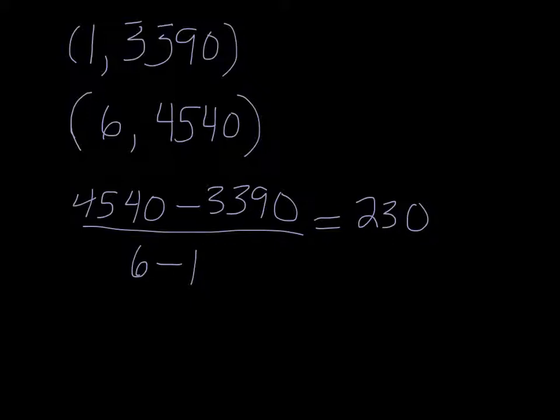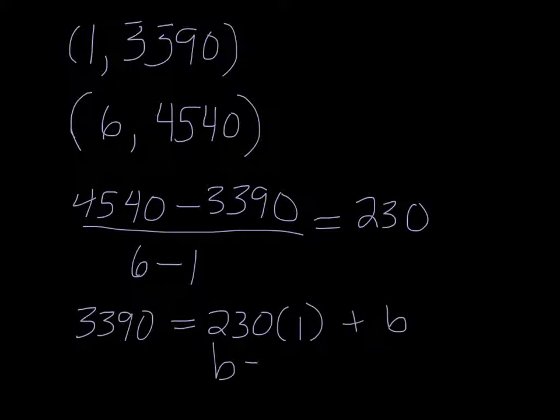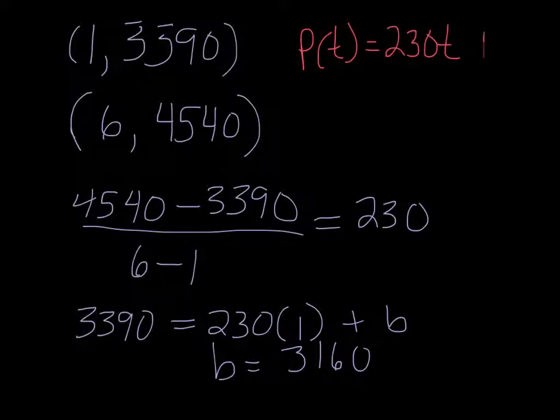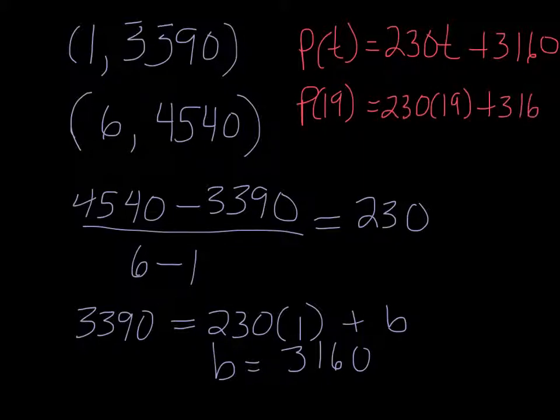And then we need y-intercepts. So pick one of the points, I'll pick the first one. So 3390 is the y, is equal to 230 times our x, which is one, plus b. So b is just going to be 3390 minus 230. So it would be 3160. That gives us our equation P of t equals 230t plus 3160. And then they want us to predict the moose population in 2009. So if you do 2009 minus 1990, that's 19 years, so we basically need P of 19. So 230 times 19 plus 3160. And that's going to give us 7530.